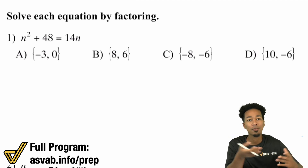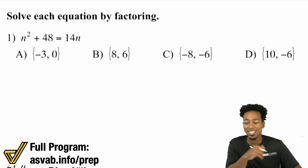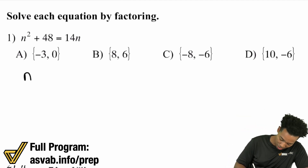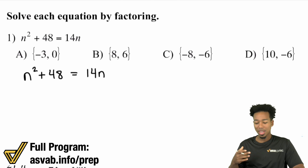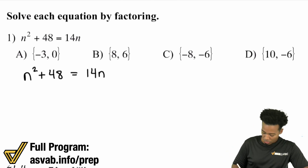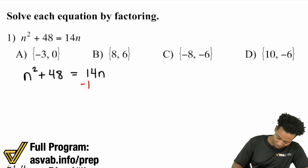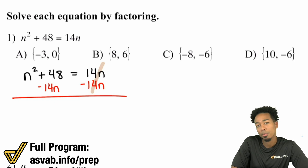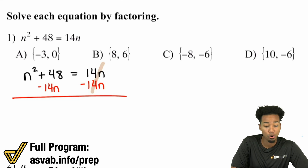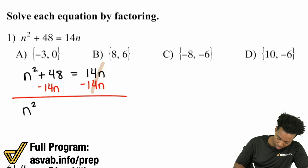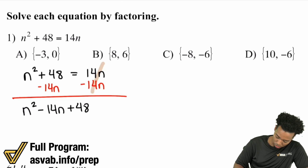So this video is just a continuation of the previous videos for solving quadratics. Let's dive in. We have n squared plus 48 equals 14n. Again, you can't factor until you have a zero by itself. So I'm going to move that 14n over to the left side — I'll subtract 14n from both sides. On the right side it cancels out. On the left, n squared and 48 are not like terms with 14n, so it'll simply be n squared minus 14n plus 48, and on the right side that equals zero.